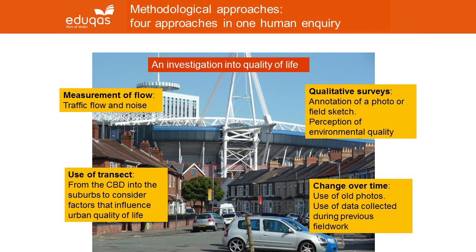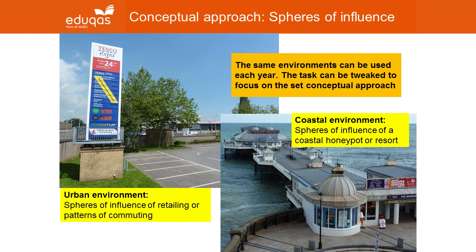Alternatively, you might decide to repeat the same fieldwork inquiry into an aspect of human geography each year, using this fieldwork inquiry to tick off each of the methodological approaches. You should then need to design an inquiry in a contrasting environment to meet the required conceptual framework in each cycle. In an ideal world, each inquiry would focus on both the methodological and conceptual approach, giving students the opportunity to have two goes at using transects and getting their heads around the concept of spheres of influence in both contrasting environments. This will obviously take a little more planning, but in order to minimise workload, you should be able to continue to use the same two contrasting environments in each cycle.